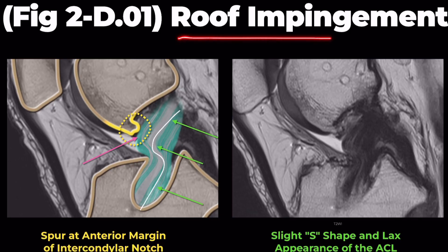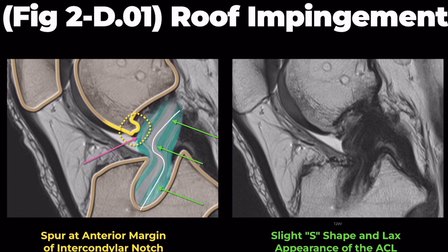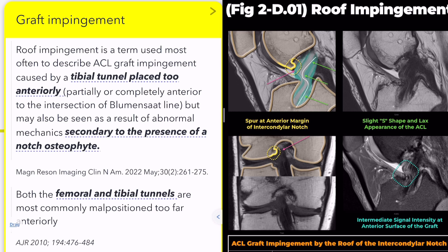Patients with graft impingement may present with loss of range of motion, most commonly full extension, and may be predisposed to graft tearing. We'll first examine two causes of roof impingement, then look at the imaging findings and briefly discuss how to differentiate it from normal graft ligamentization.